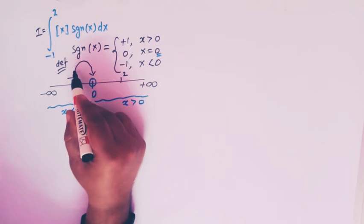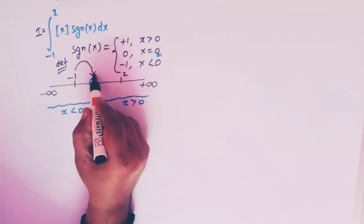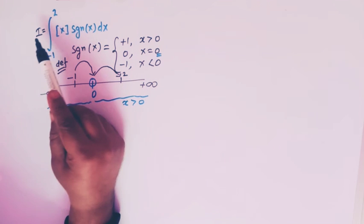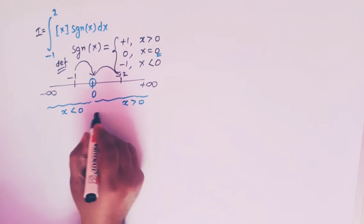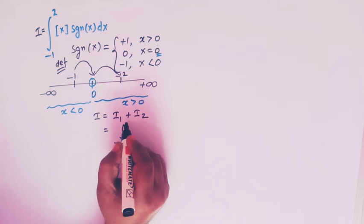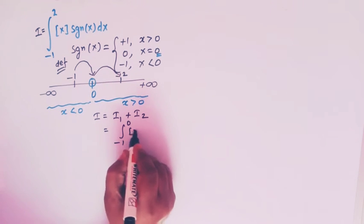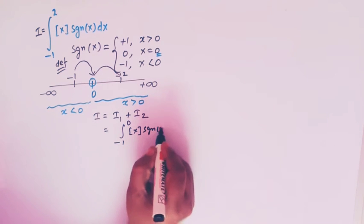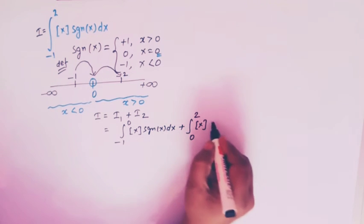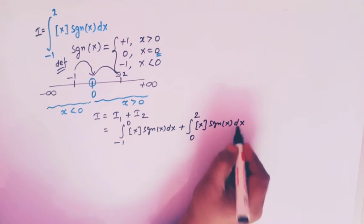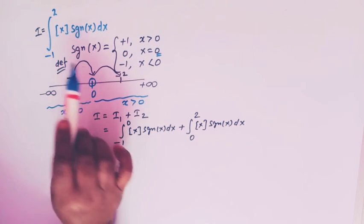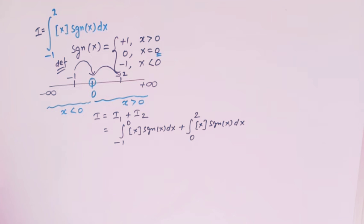We break the limit at zero, so we have minus one to zero and zero to two. We take this integral I as a sum of two integrals: I1 from minus one to zero of the greatest integer function of x times signum of x dx, and I2 from zero to two of the greatest integer function of x times signum of x dx.